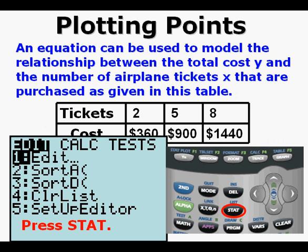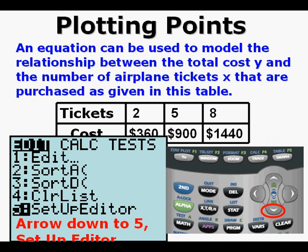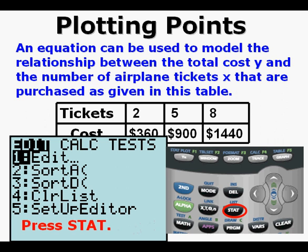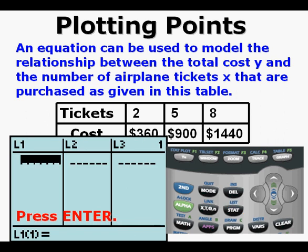To get the lost list back, press STAT, arrow down to 5 — Setup Editor — and press ENTER. Press ENTER again. Now to check, press STAT then ENTER. We see that List 1 has been restored after having been deleted. I show you this so you will know what to do if a list should accidentally be deleted.